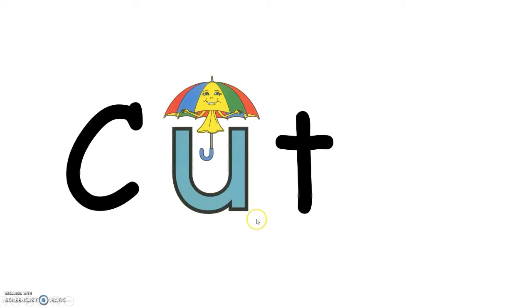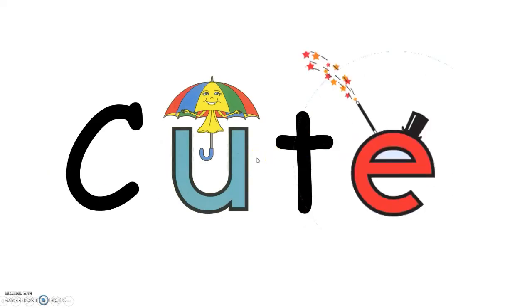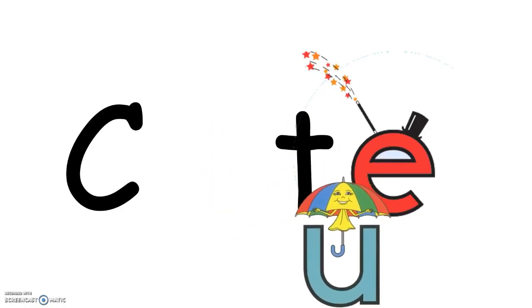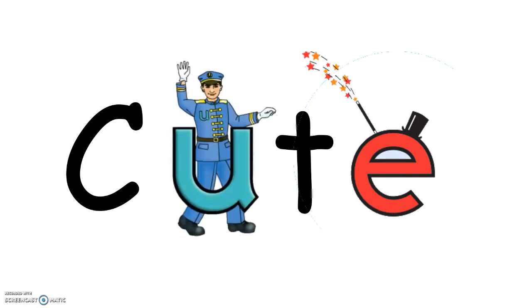How about the word 'cut'? Of course all of you know this word — when you cut paper, cut your hair, cut other things. But when magic E appears, the short vowel goes away and Mr. U comes along, and this word becomes 'cute' — like cute baby, cute boy, cute girl. And that's how it is.